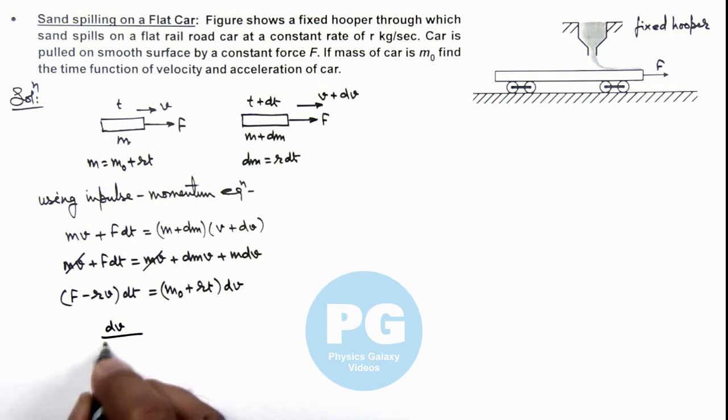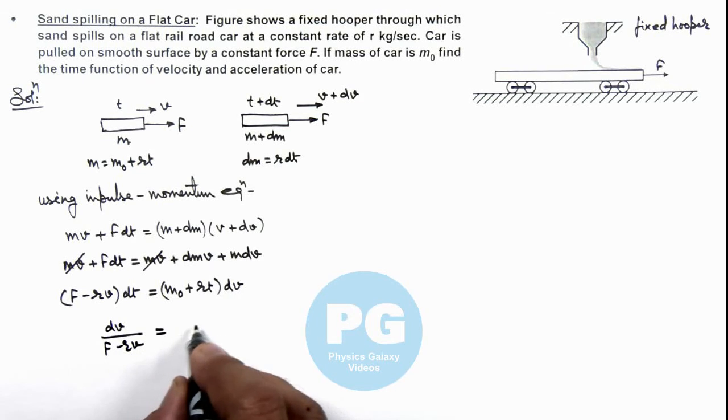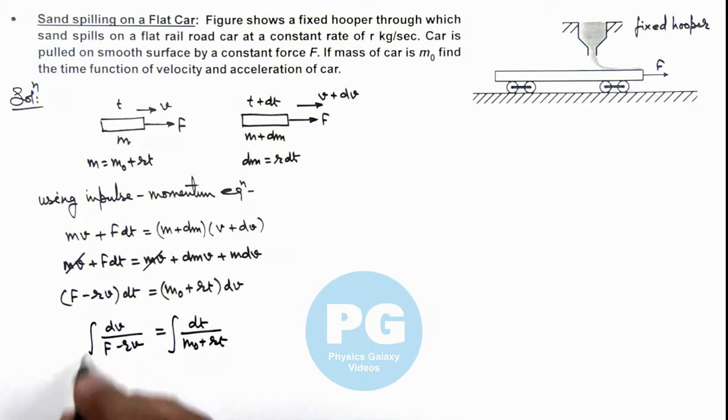Further we can write dv upon (F minus rv) is equal to dt upon (m₀ plus rt). And if we integrate these two sides of equality, then we can write the limits also. At t equal to zero, the speed was zero, and at a general time t, speed increases to v.